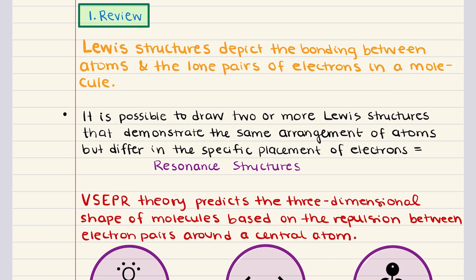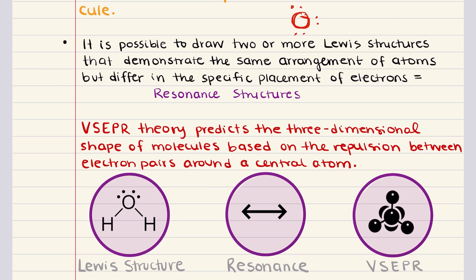A Lewis structure, also known as a Lewis dot diagram, represents the chemical symbol of an element surrounded by dots, each symbolizing valence electrons. Bonding electrons are depicted as lines between atoms indicating shared pairs, while lone pairs are shown as pairs of dots on individual atoms. Despite their simplicity, Lewis structures do not always effectively describe a molecule's bonds, and one significant limitation is their inability to represent actual electronic distribution accurately.